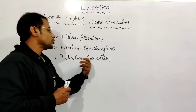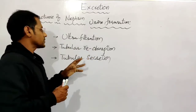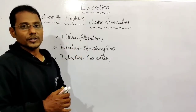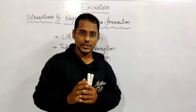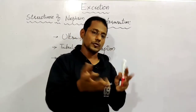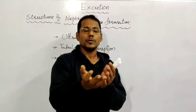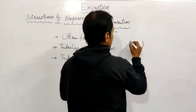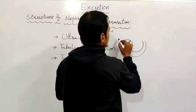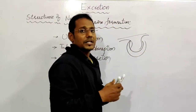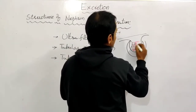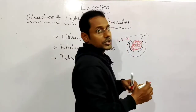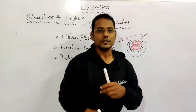Think of it like a filter pattern and it will be very easy to understand. So this is the Bowman's capsule. The glomerulus is inside the Bowman's capsule. The glomerulus is nothing but a bunch of fine blood capillaries. This is called the glomerulus. There is an afferent arteriole and an efferent arteriole.